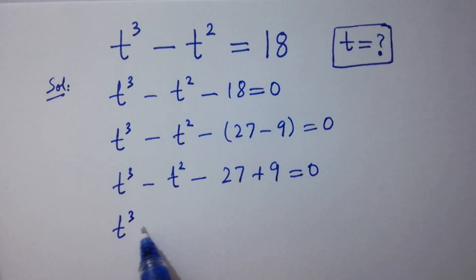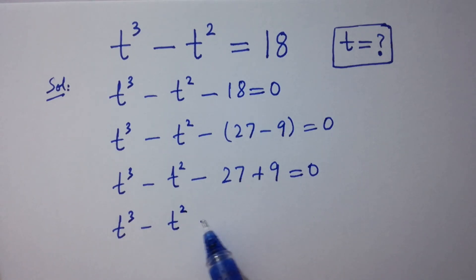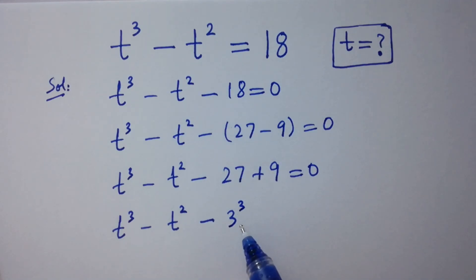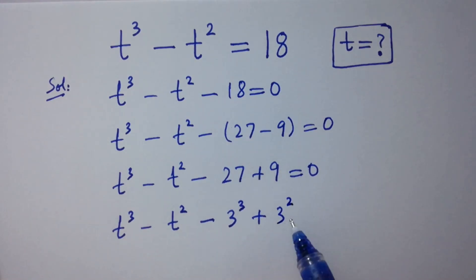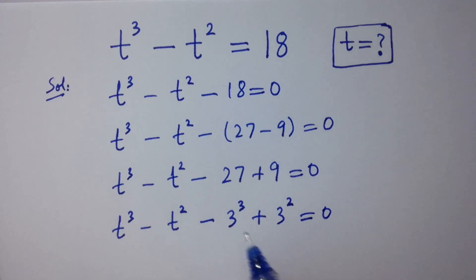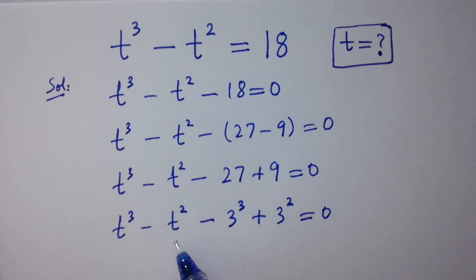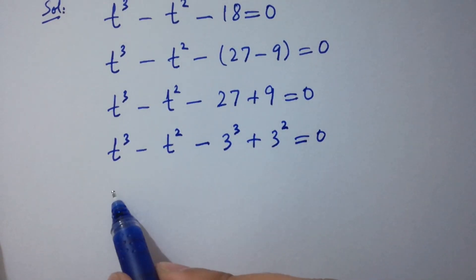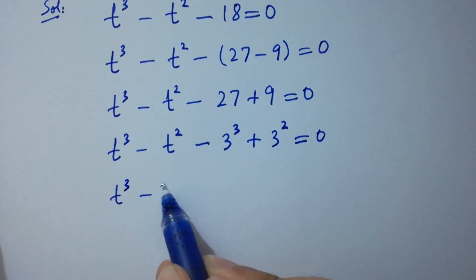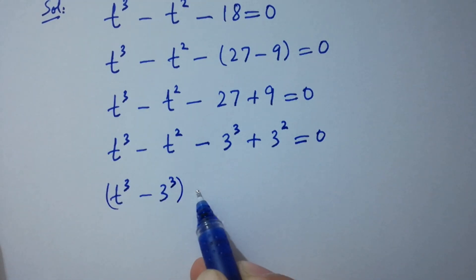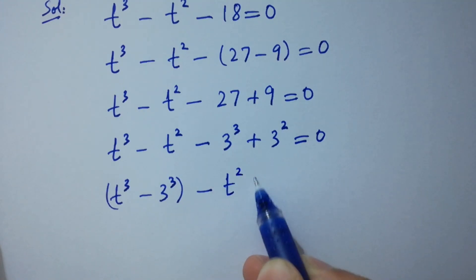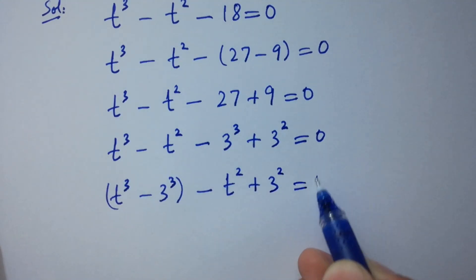So t cube minus t square minus 27 — note that 27 is 3 cube (3 times 3 is 9, 9 times 3 is 27) and 9 is 3 square (3 times 3 is 9) — equals 0. By corresponding, here is t cube and here is 3 cube, here is t square and here is 3 square. So this becomes t cube minus 3 cube minus t square plus 3 square equal to 0.